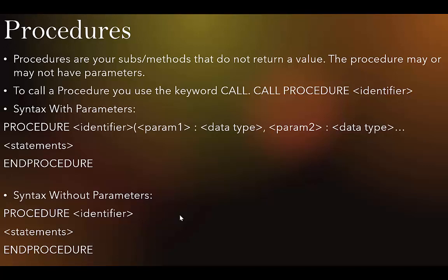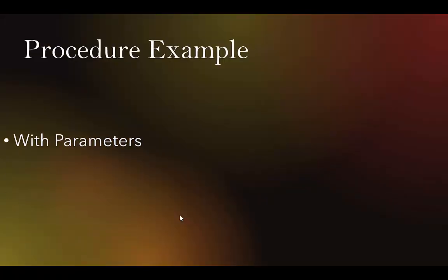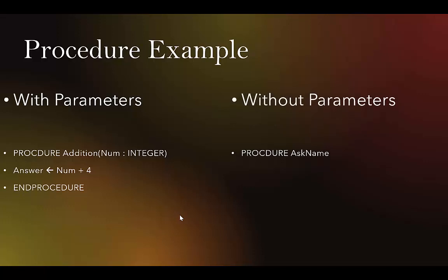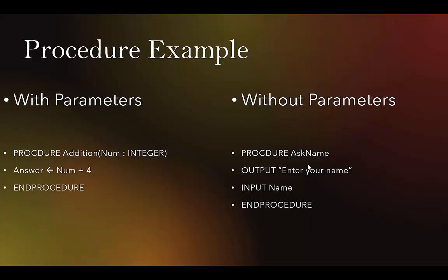Here are examples. With parameters: PROCEDURE addition(num : INTEGER) — answer ← num + 4 — ENDPROCEDURE. Without parameters: PROCEDURE ask_name — OUTPUT 'Enter your name' — INPUT name — ENDPROCEDURE. Make sure you spell PROCEDURE correctly, give your procedure a name, and determine whether or not it needs parameters.